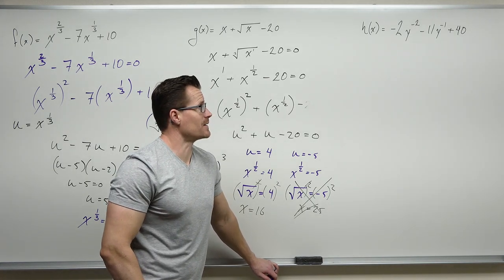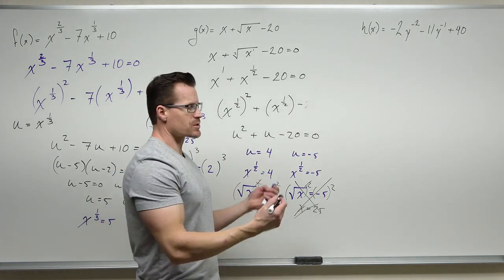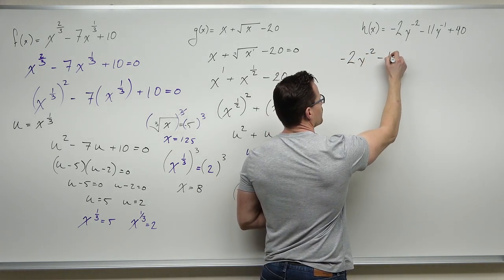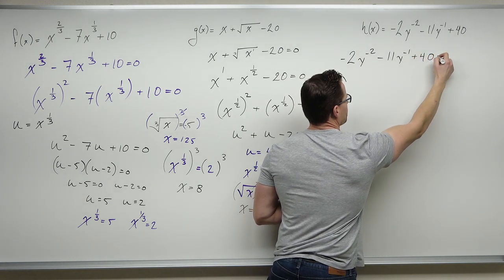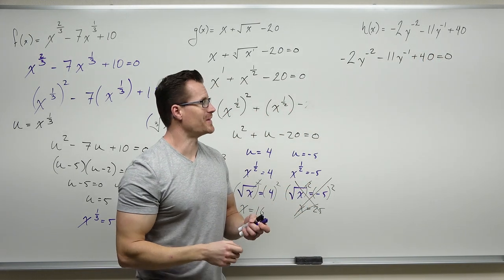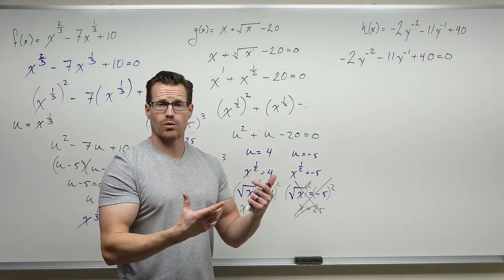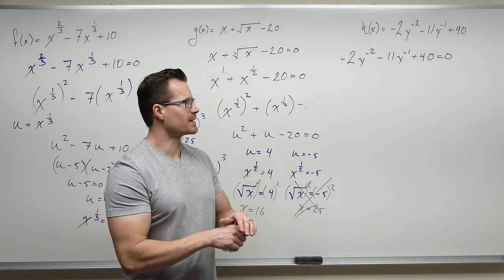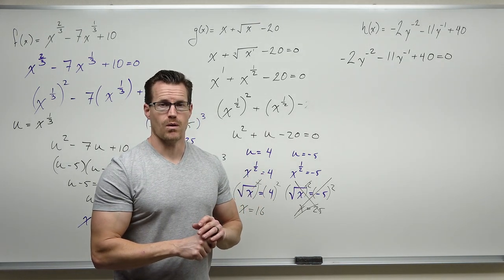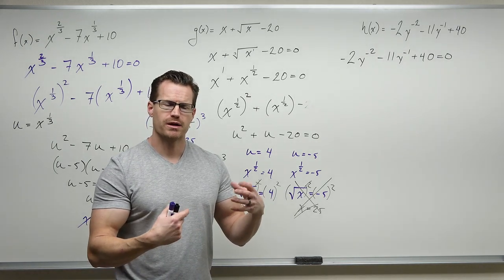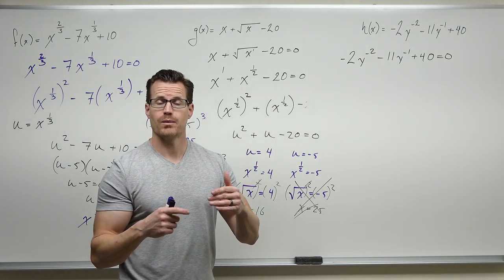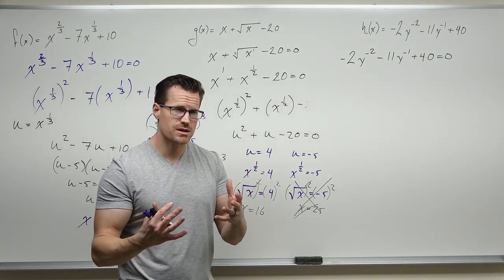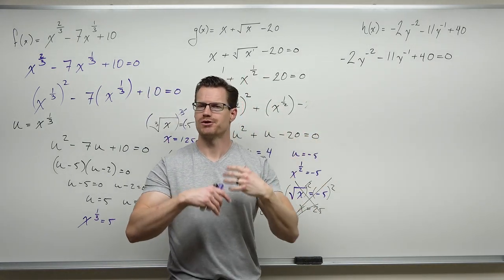That last example looks pretty nasty — let's handle it. We'll find x-intercepts by setting this equal to zero. Is everything on one side? Yes. Is it in order? Sort of — exponents are negative but decreasing in absolute value. But the first term is negative, and we always want the first term positive when finding x-intercepts. So we multiply both sides by negative one and change all the signs.